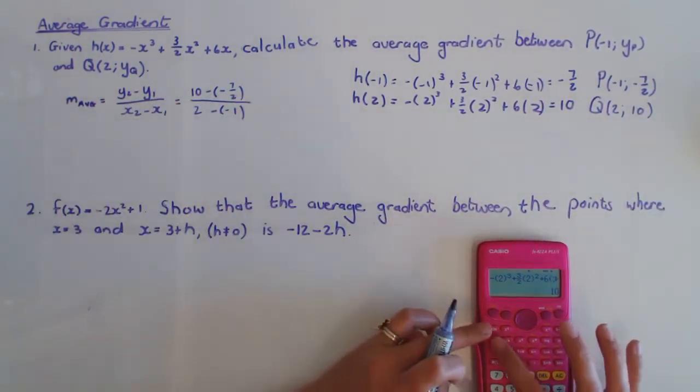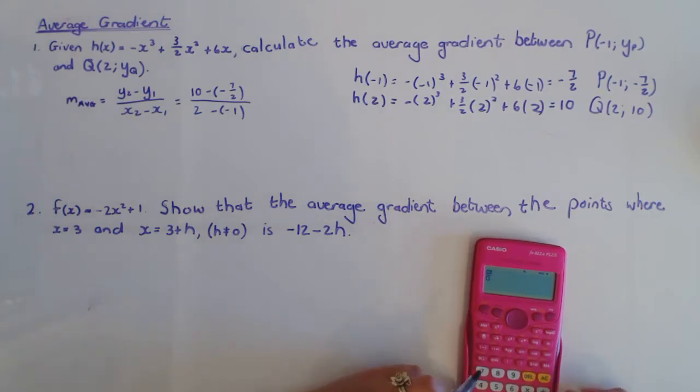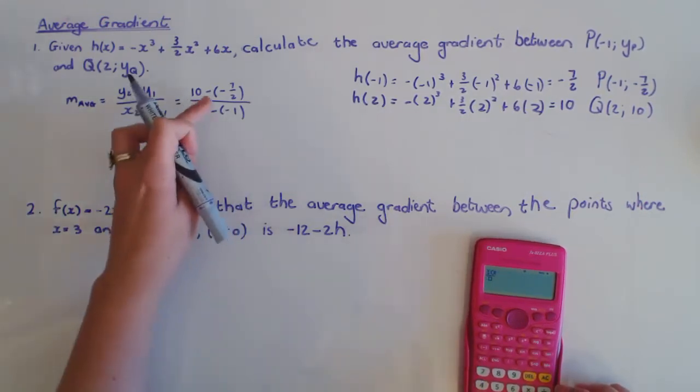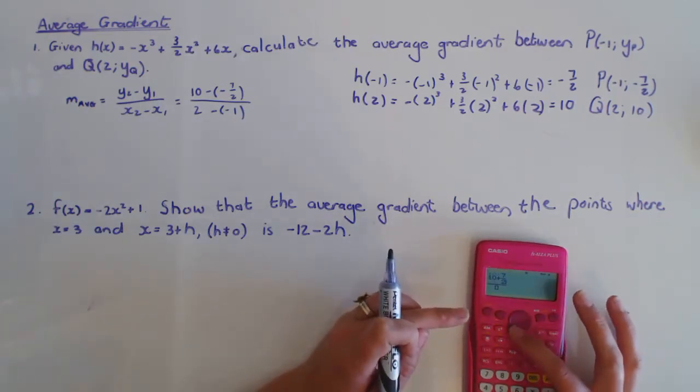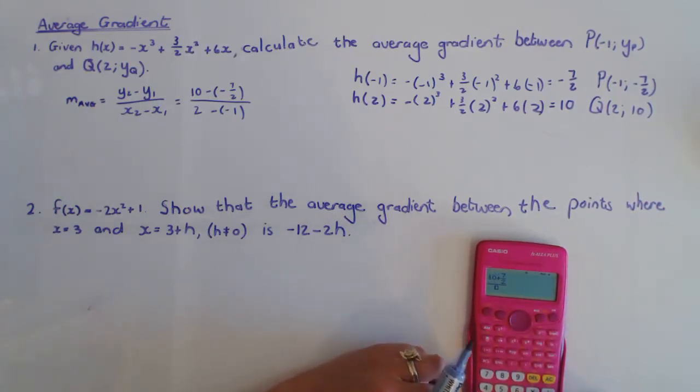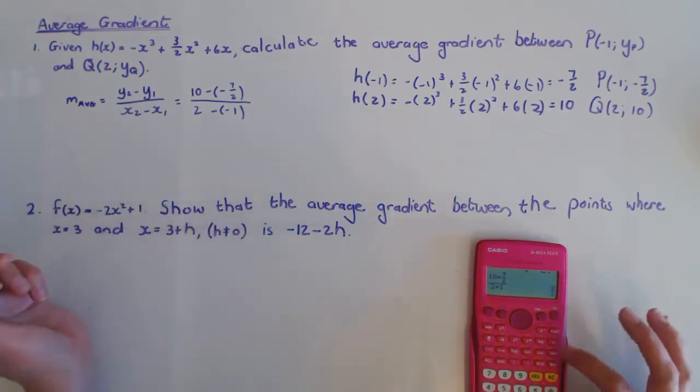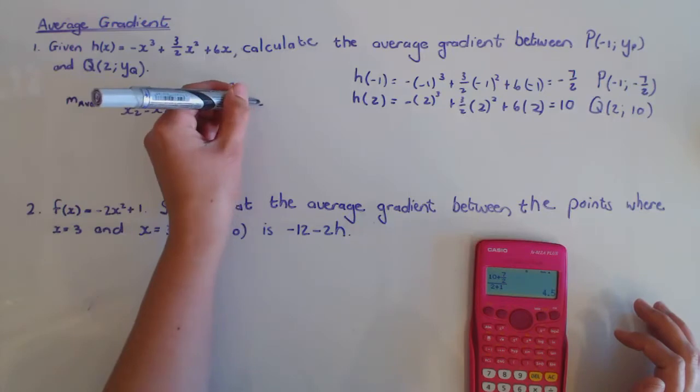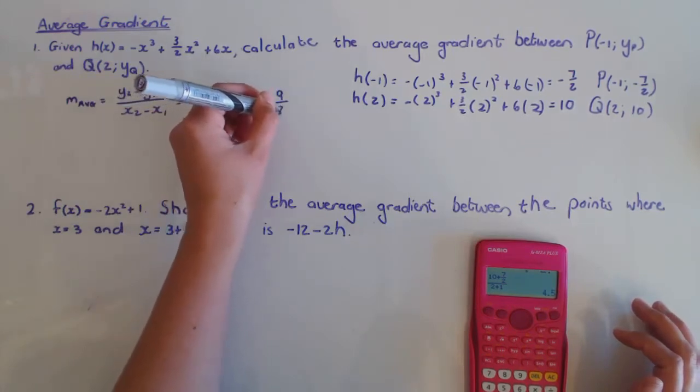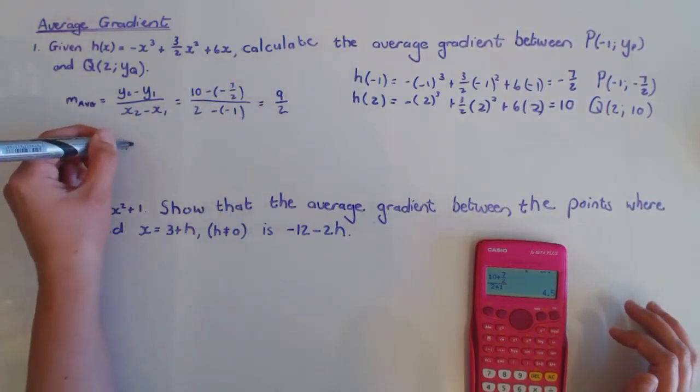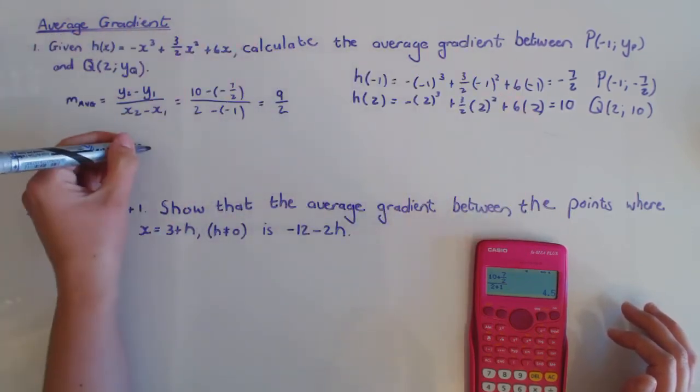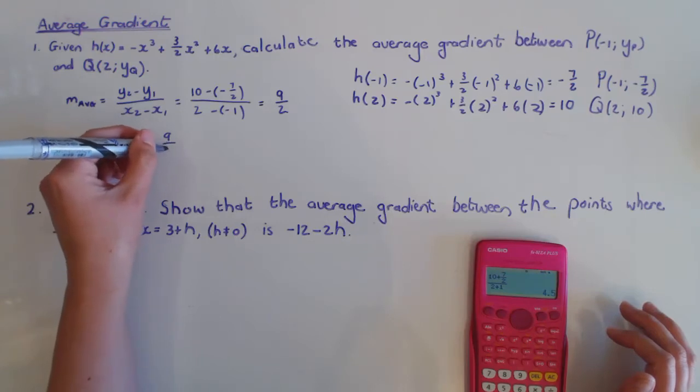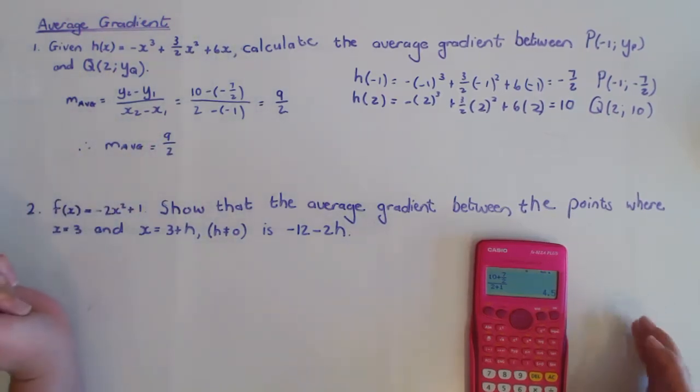And then you can actually just substitute that into your calculator. It would become a plus there, but if you put the minus minus into your calculator, it will still give you the same answer. So I'm going to do the difference between the y's, which is 9/2 or 4.5, which means the average gradient there between those two points on this function will be 9/2 or 4.5.